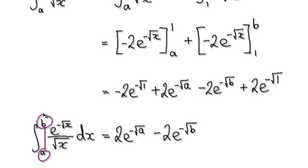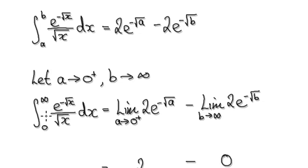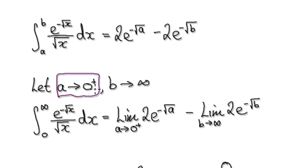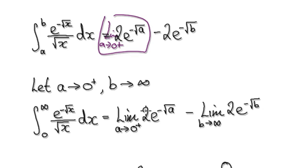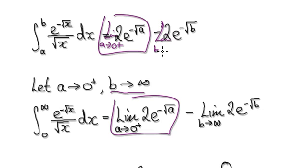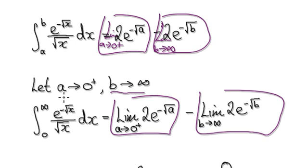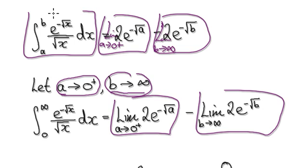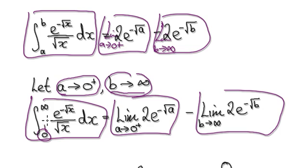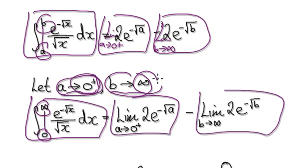Remember, this is from A to B. Now we're going to let A head towards 0 from the right-hand side, and allow B to head towards infinity. We take the limit as A tends to 0 from the right-hand side, so this becomes this. And then we take the limit as B heads towards positive infinity, so this becomes this. We are now integrating from 0 to infinity rather than from A to B.